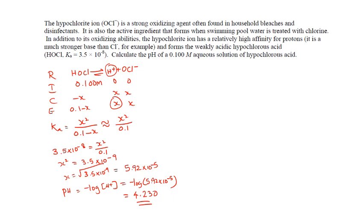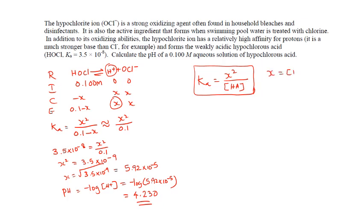A useful shortcut: instead of writing the full ICE table, note that after neglecting x, Ka = x²/[acid]. So step one is to use the Ka value to find x, where x equals the hydrogen ion concentration. Step two is to use [H⁺] to calculate the pH.